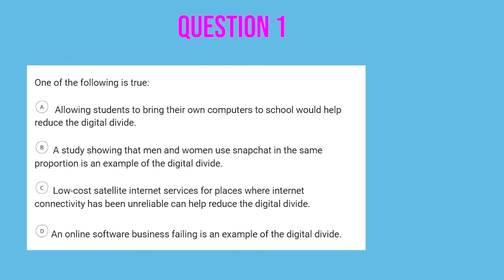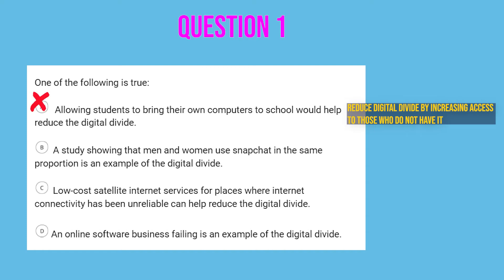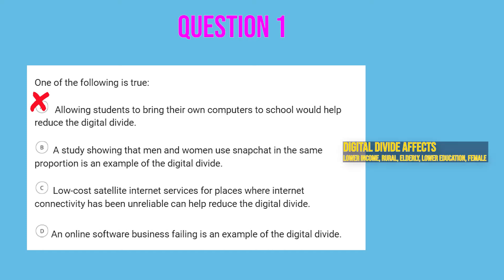Practice question one: which of the following is true? Option A: allowing students to bring their own computers to school would help reduce the digital divide. We're not increasing access to people who do not have it, so this is not true. Option B: studies showing that men and women use Snapchat in the same proportion is an example of digital divide. This is not true because digital divide affects these groups asymmetrically — if it's affecting men and women equally, we're not seeing an effect of the digital divide.